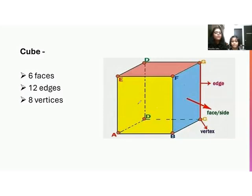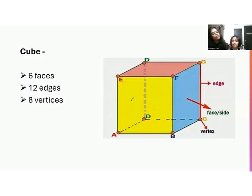And what other information do you want to share? There are 12 edges. Correct, there are 12 edges. Ajvika, what do you mean by edges? Edges are the corners that join two surfaces. And how many vertices are there? There are eight vertices. What do you mean by vertices? Vertices are corners — one, two, three, four, five, six, seven and eight. Eight vertices are there, and twelve edges.